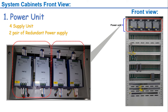The power unit or power rack consists of four power supply units. These power supplies are used as two pairs of redundant power supplies. A pair of 24V, 10A redundant power supplies can only provide supply to three racks of a system cabinet.